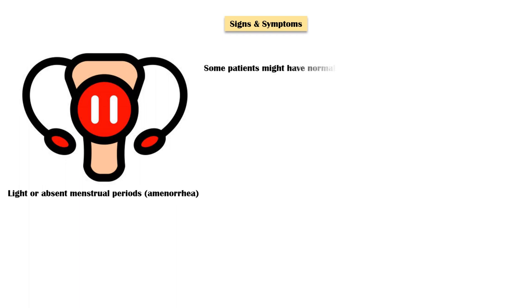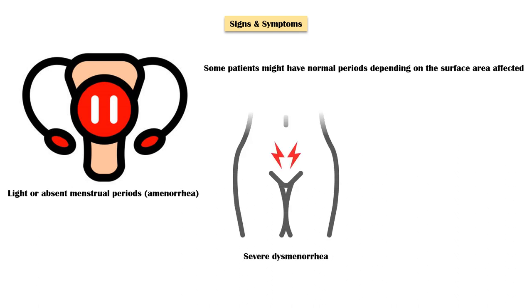Many patients with Asherman syndrome may have light or absent menstrual periods. However, some patients might have normal periods depending on the surface area that is affected. Some women will have absent menstruation with severe dysmenorrhea around the time of the anticipated menstrual period. This is due to the buildup of menstrual blood as a result of obstruction by the adhesions.